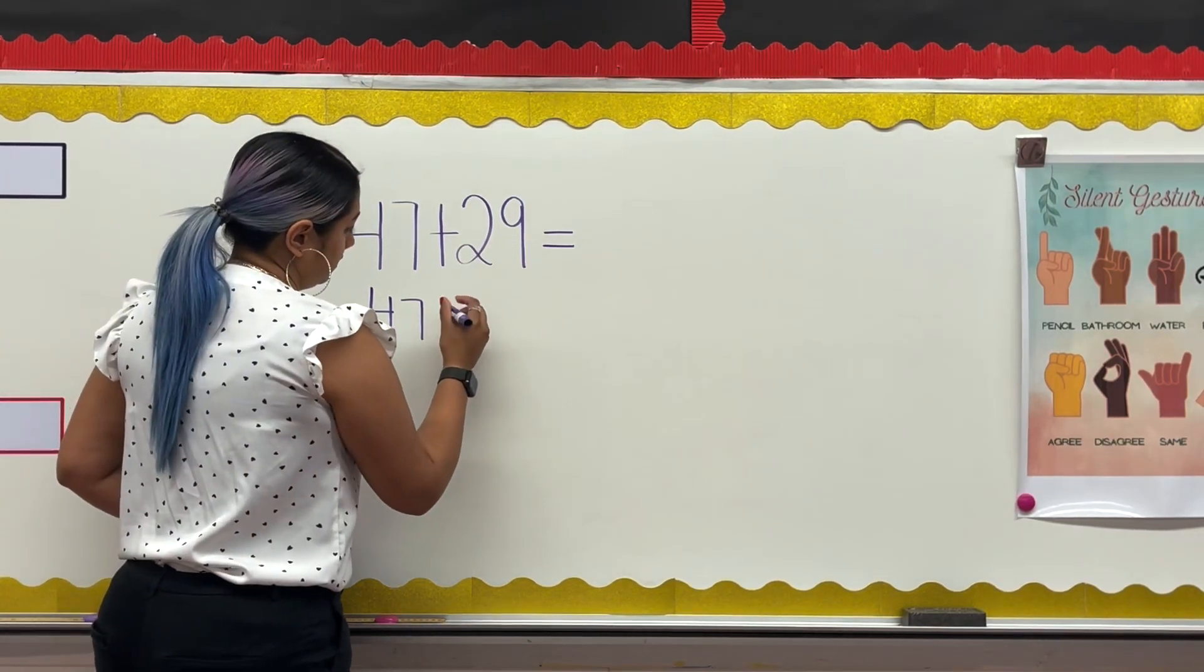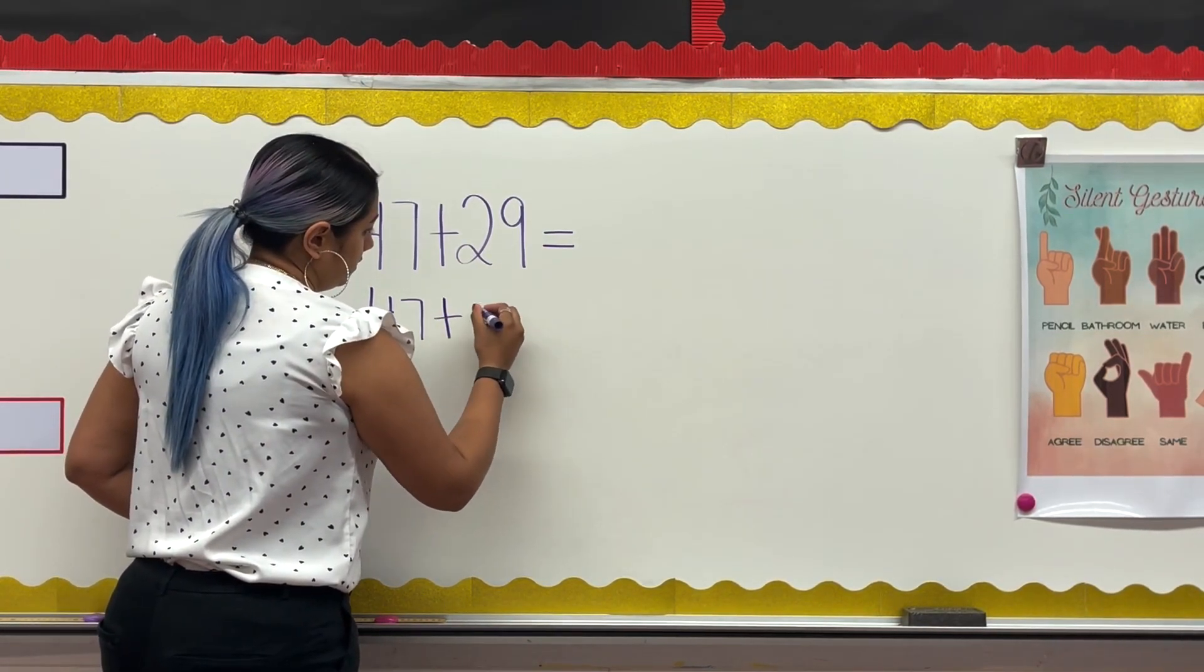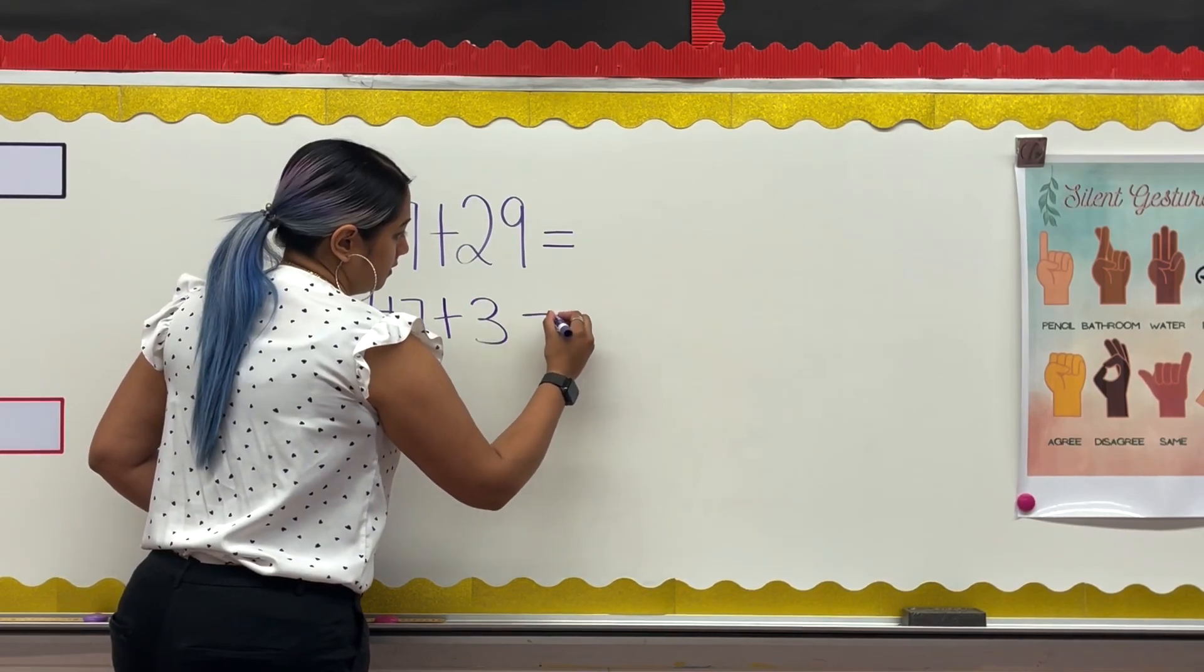Next, I continue adding in increments that are easy for me until I've added my whole addend to the first addend.